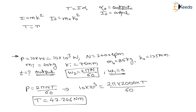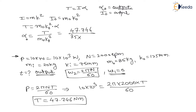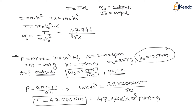Therefore torque T = M₀K₀² × α. Only α is unknown, so: α = T / (M₀K₀²) = 47.746 N·m. Since K₀ = 125 mm, we convert torque to N·mm: 47.746 × 10³ N·mm, divided by 35 × 125². This gives angular acceleration α = 87.307 rad/s².